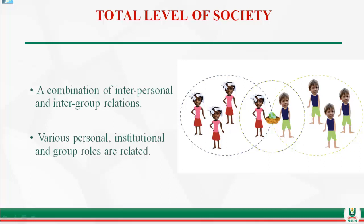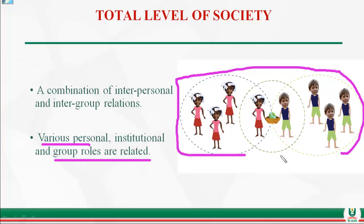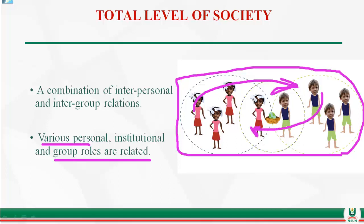To summarize the three levels: the interpersonal, the group, and the total level. The total level is a combination of interpersonal and intergroup coming together. At this level, various personal, institutional, and group roles are all related in a massive type of interaction.